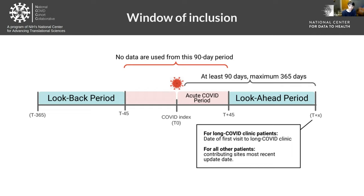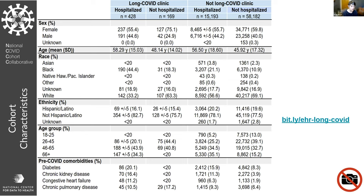We made sure to look for people with confirmed COVID — a positive COVID test, a COVID diagnosis in the ED, or an inpatient visit — and that it had been at least 90 days since the acute COVID period. We set lookback and look-ahead periods to gather data and evaluate patterns of care, diagnoses, and medications. We chose a machine learning approach and were fortunate that three N3C sites provided training data.